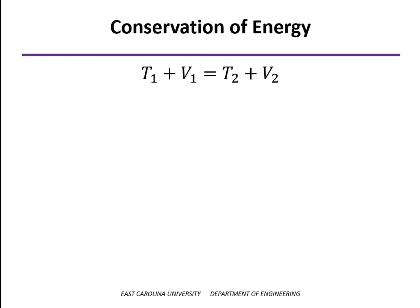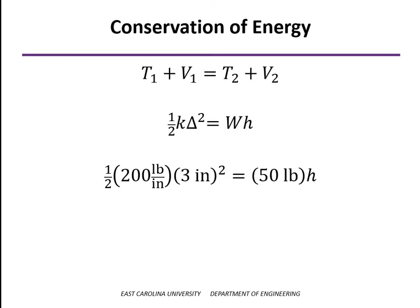So, applying our conservation of energy equation again, this time, delta is known, K is known, the weight is known, so the height is the only unknown, and we can solve for that, and it turns out to be 18 inches.